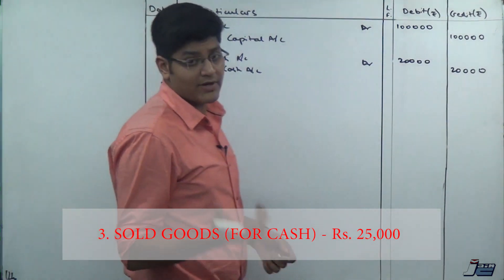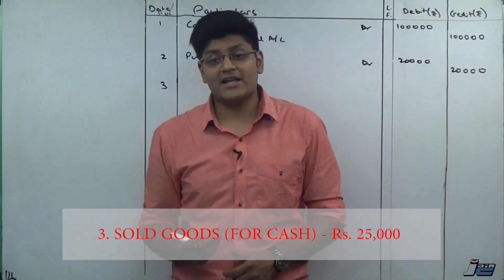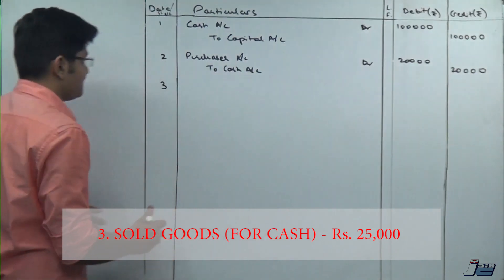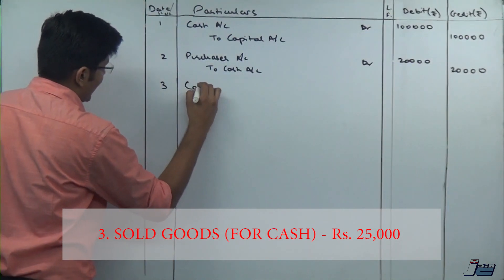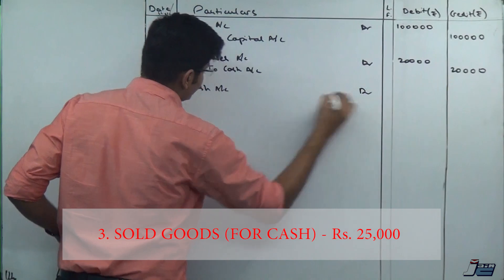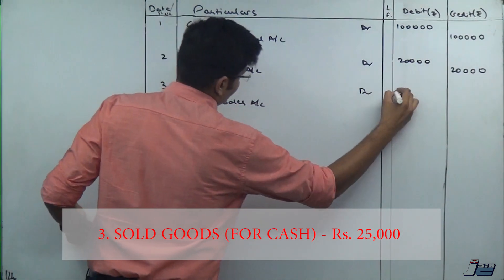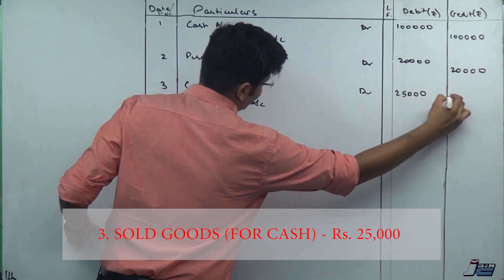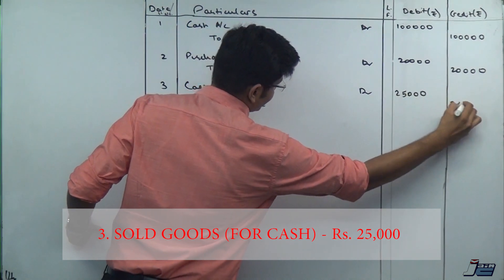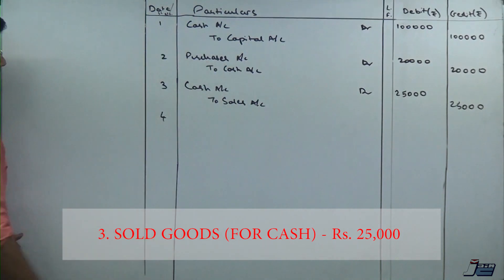Entry number three: sold goods, rupees 25,000. Again, no medium is specified, so we assume cash. Cash is coming into the business because we are selling goods. So: Cash Account debit to Sales Account, amount 25,000. These three entries we had previously discussed, just a brief recap.